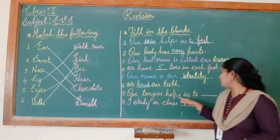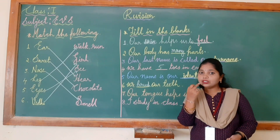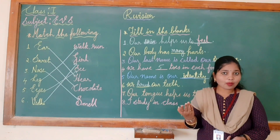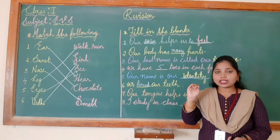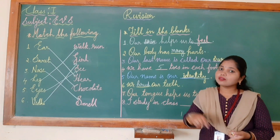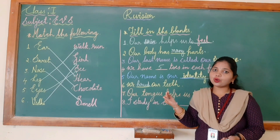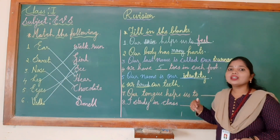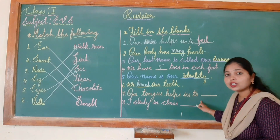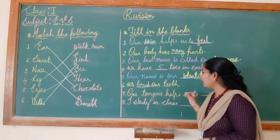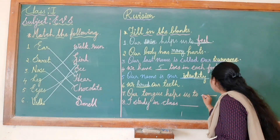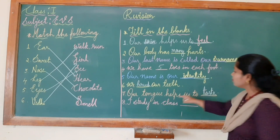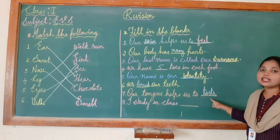Seventh: our tongue helps us to dash. Children, what does our tongue do? Our tongue helps us to taste the food. There are four types of taste: sweet, salt, sour, bitter. So I will write 'taste' here, spelled T-A-S-T-E. Our tongue helps us to taste.